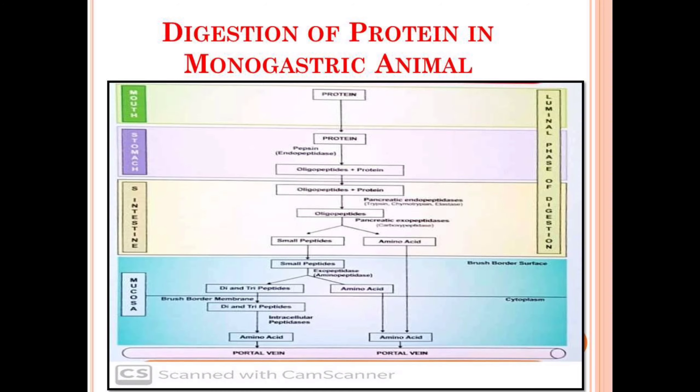First of all, the animal is fed on a protein-rich diet and it will be ingested with the help of the mouth. There will be no digestion of protein in the mouth of the monogastric animal, so the protein-rich diet will move towards the stomach.